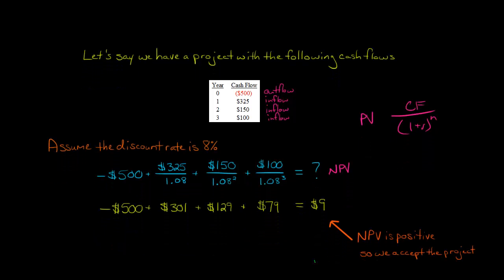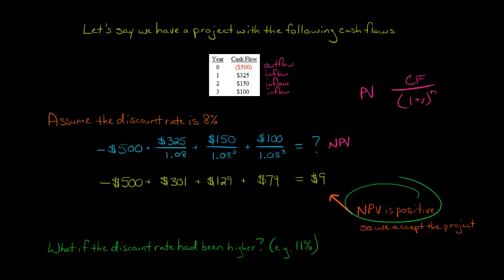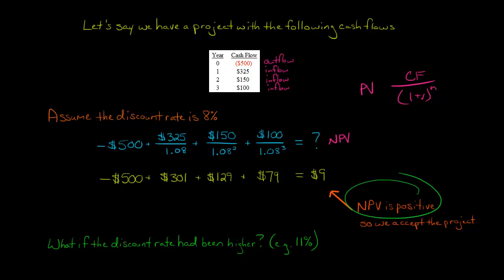What does that mean? That means that the NPV, the net present value of this project is $9. So based on this discount rate, this project adds wealth to the firm, and because the NPV is positive, we should accept this project. That's the decision rule. If the NPV is positive, we should accept.